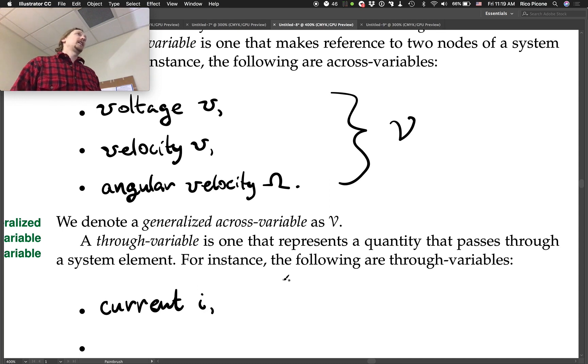We already know that the current flowing through an element, if you looked at it on, say, it was a resistor. The current flowing through the resistor on this end is the same as the current flowing through the resistor on that end, right? It's the same anywhere in the resistor. So that would be a through variable.